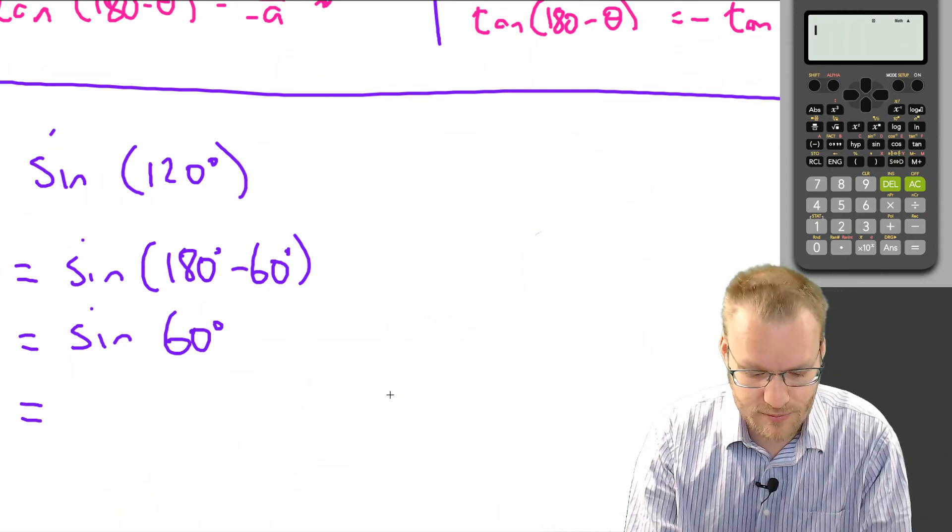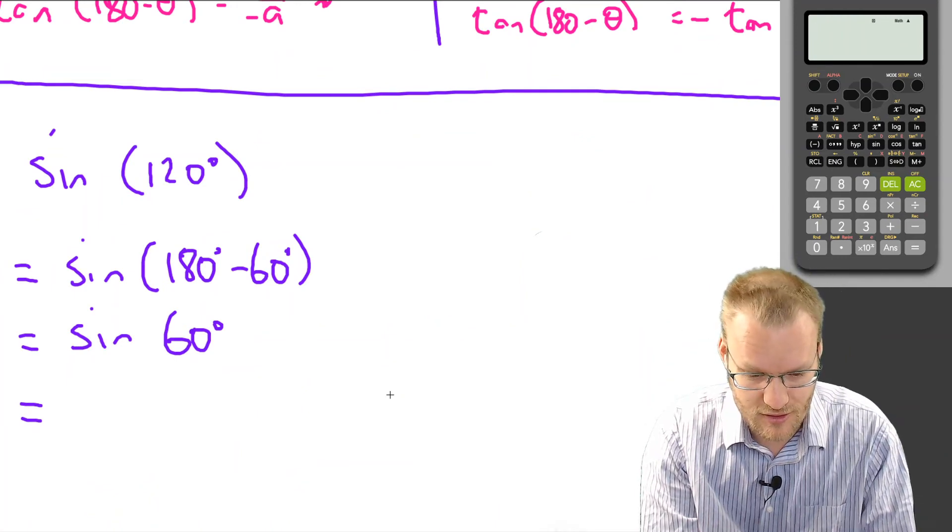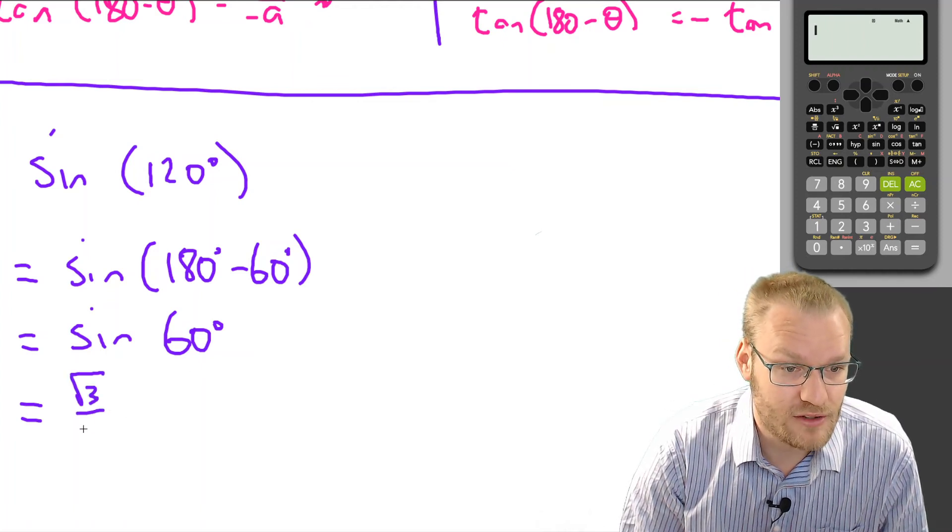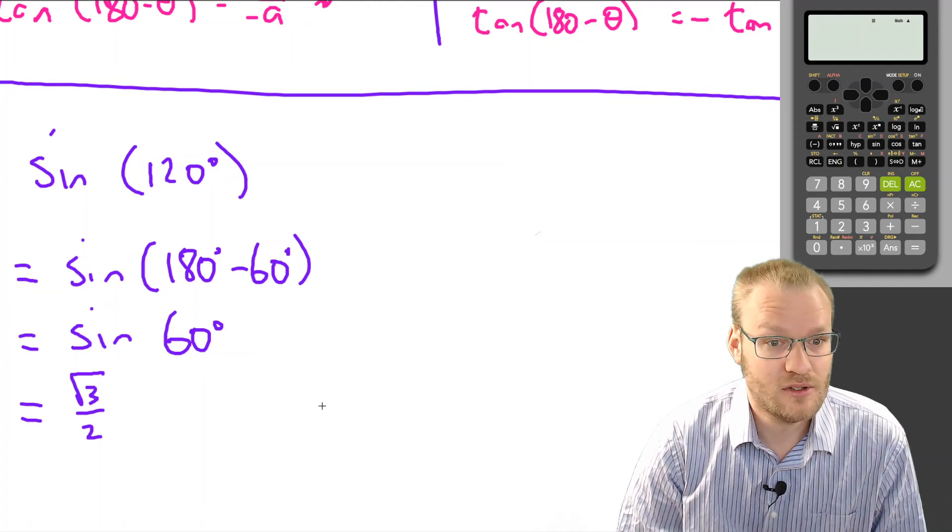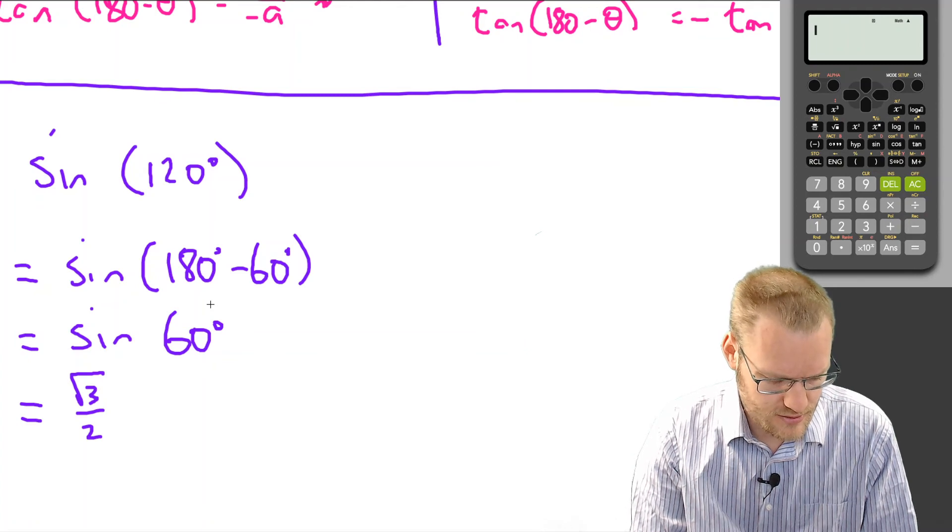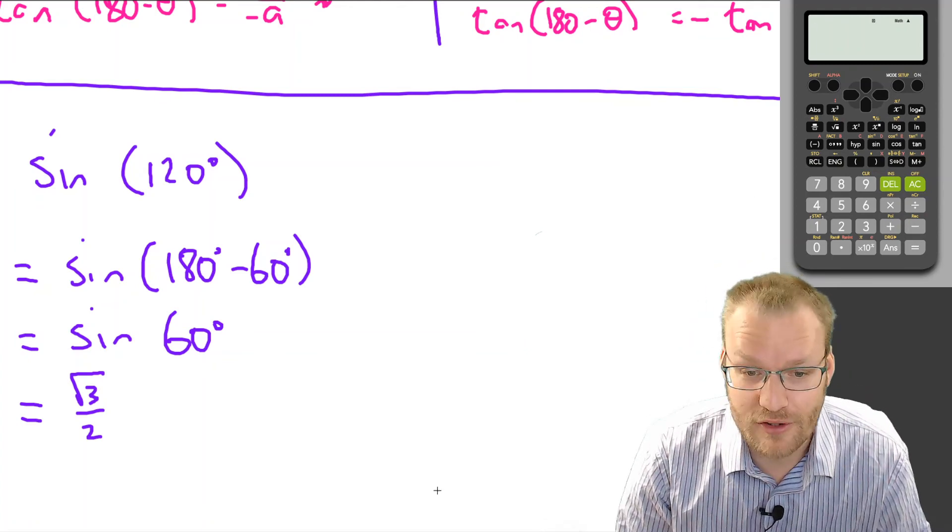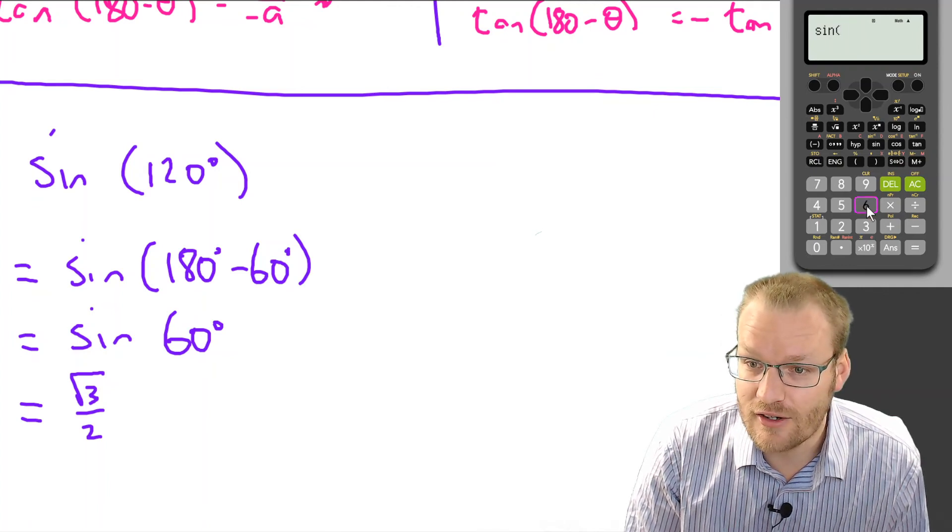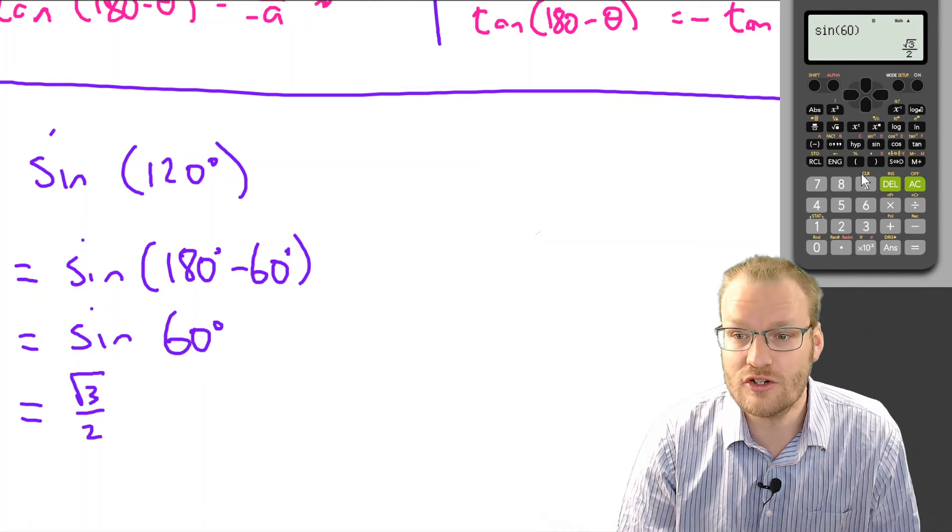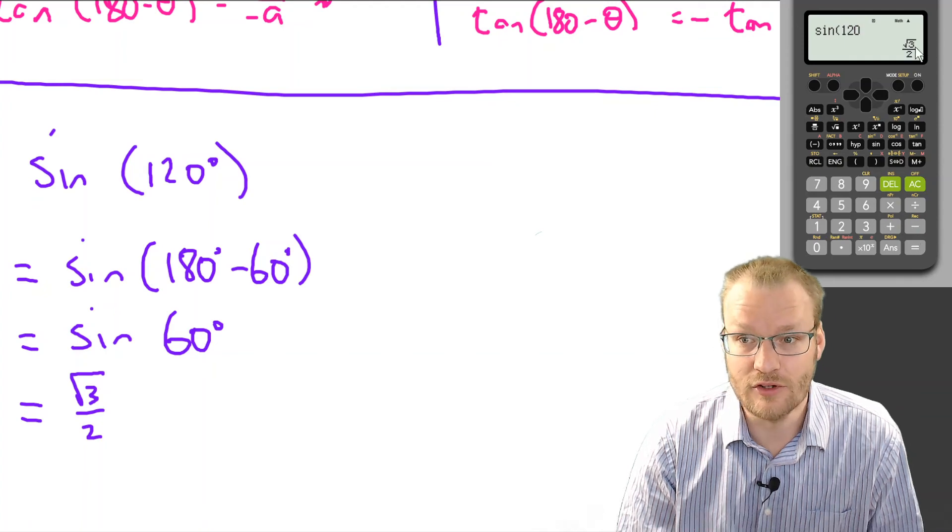Okay, sin of 60. You may not recall from your special angles, but you'll always have your calculator with you. So, you can just go sin of 60, root 3 over 2, root 3 over 2. And, there we go. There's the answer. Now, you can always just check it. What is sin of 120, root 3 over 2? Oh, I should be doing it on here. Hey, so I can just go sin of 60, root 3 over 2. Notice how that's the same as sin of 120, root 3 over 2.